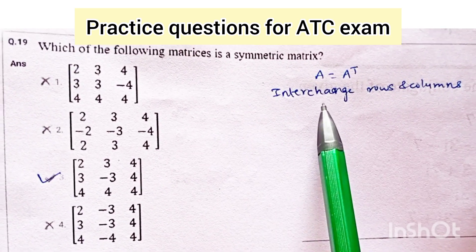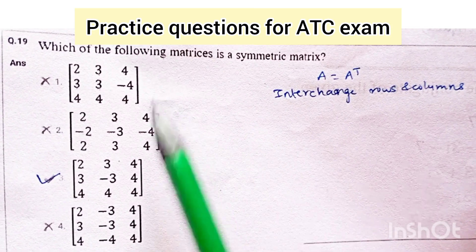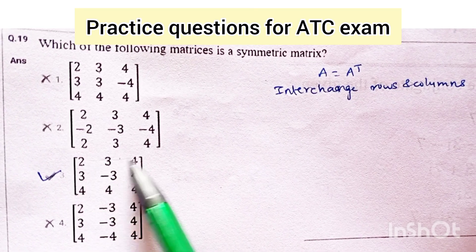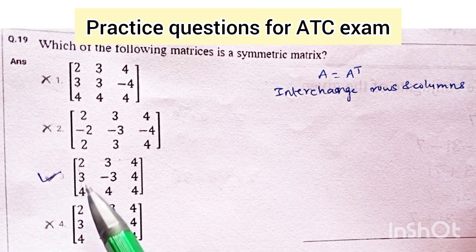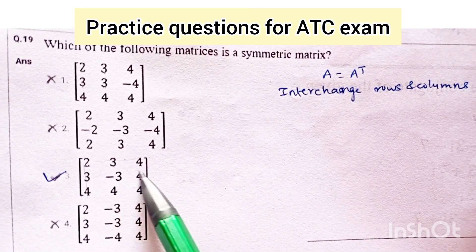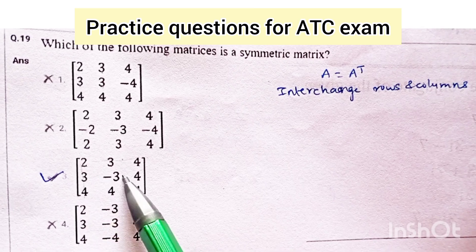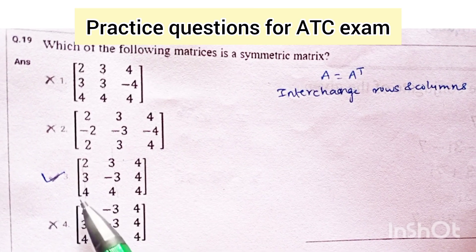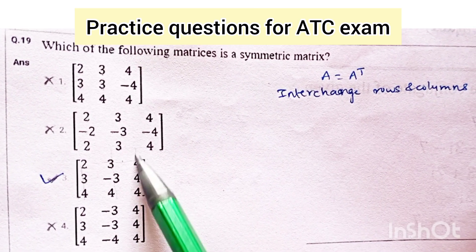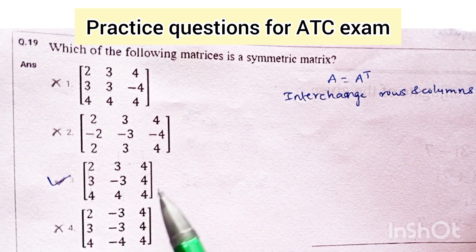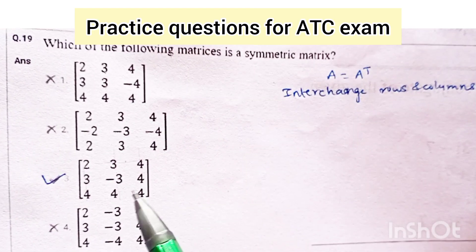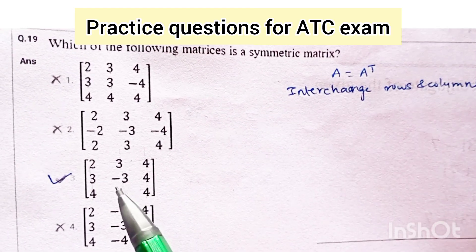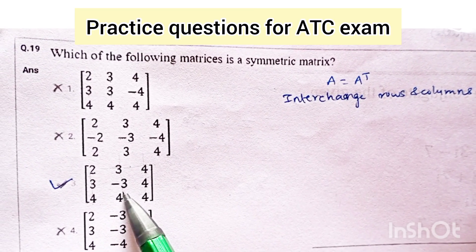You have to solve this by trial and error. In option number 3, the matrix entries are 2 3 4, 2 3 4, 3 -1 4, 3 -3 4, 3 -3 4, and 4 4 4. When you change the rows and columns, the matrix remains the same. So this is a symmetric matrix.